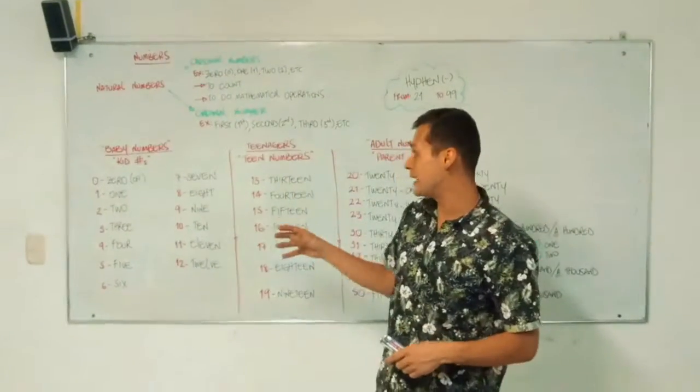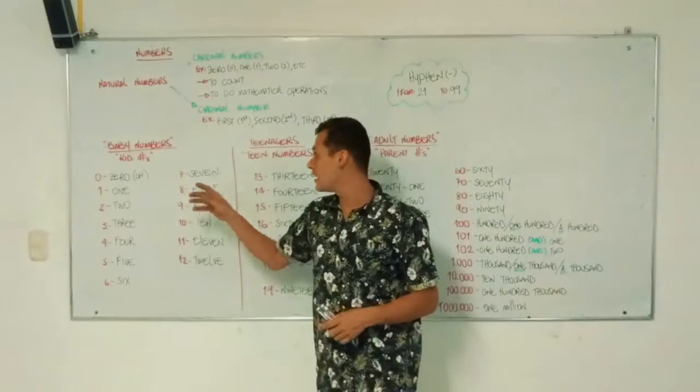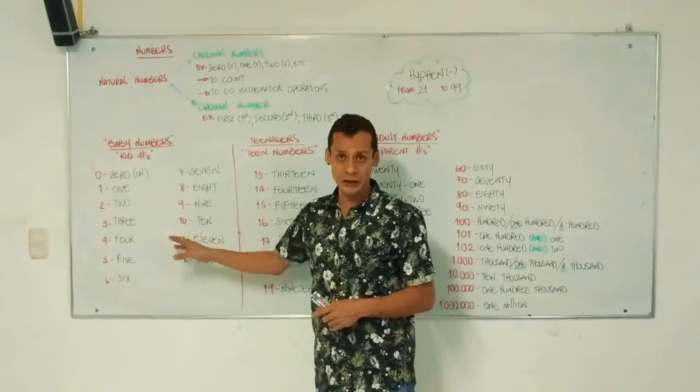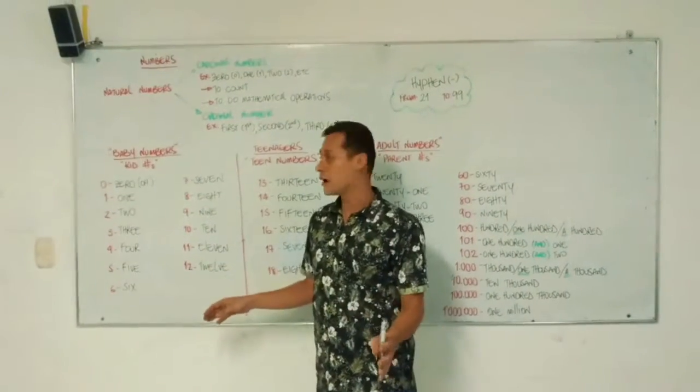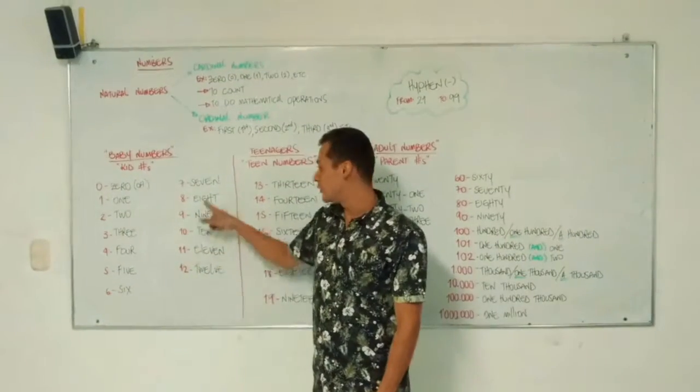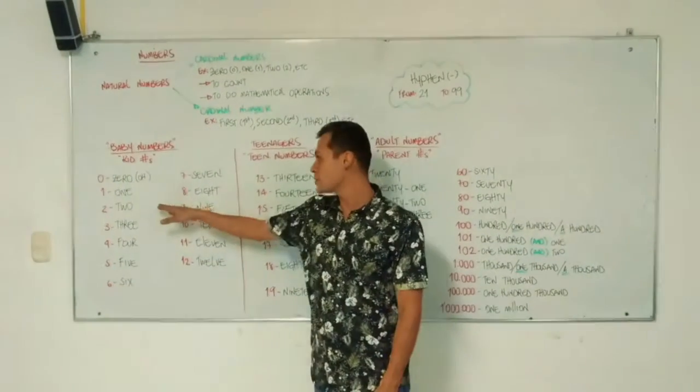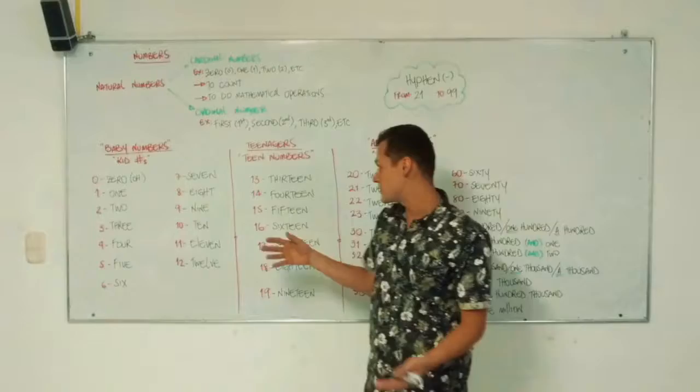Baby numbers, I call them like that because the same way as kids, they are all different. If you see a kindergarten, all of the kids look different. The same as numbers. Some of them are short, some of them are long, etc.